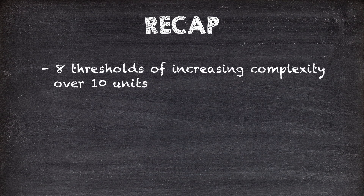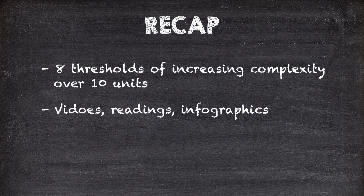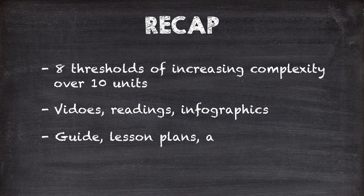Let's recap. Big History tells the story of eight thresholds of increasing complexity over the course of ten units. In addition to all of the lesson content — the videos, readings, and infographics — each unit includes a guide, lesson plans, and assessments. That's all for now, but be sure to check out the Big History Project Teacher Community on Yammer for more information about the course.